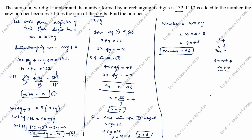The interchanged number is 10y + x = 10 × 8 + 4 = 80 + 4 = 84. You can verify: interchanging 48 gives 84, and 48 + 84 = 132, which confirms our answer is correct. Thanks for watching this video.